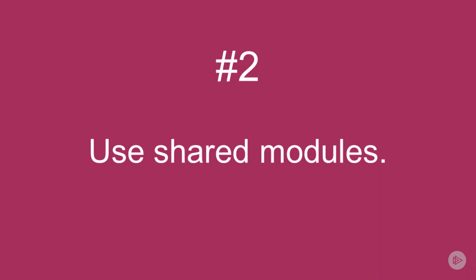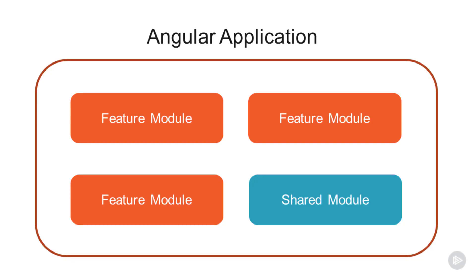The second key suggestion I have for you is related to the first, and that's to create shared modules. They're created and structured just like feature modules, but they're not related to a single feature. In just about every medium to large sized application, you're going to accumulate a handful of components, directives and pipes that aren't really feature specific and that need to be used throughout your app. Shared modules are a great way to make all of that application wide functionality available in one module you can easily import when needed. This is also another nice way to keep your code neatly organized and packaged into easily importable chunks.